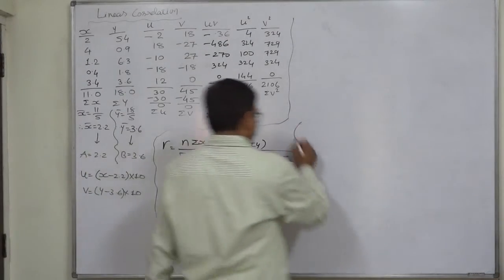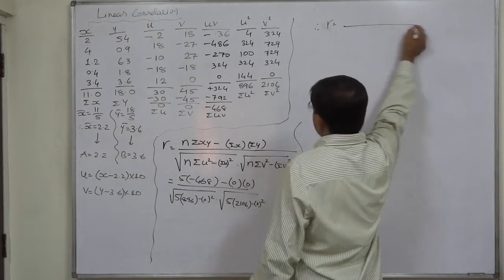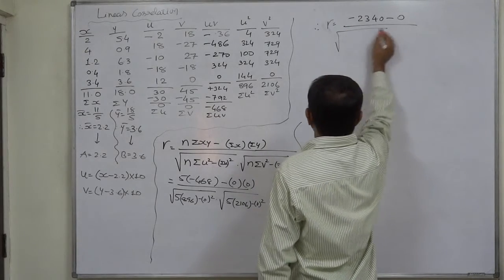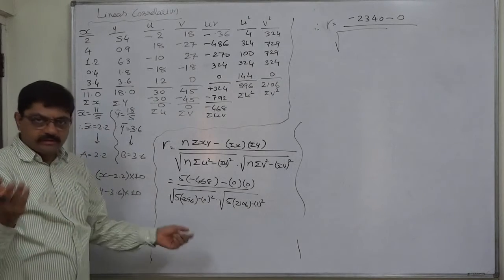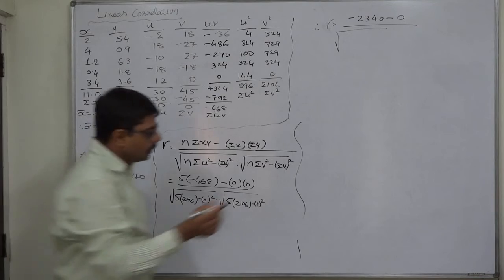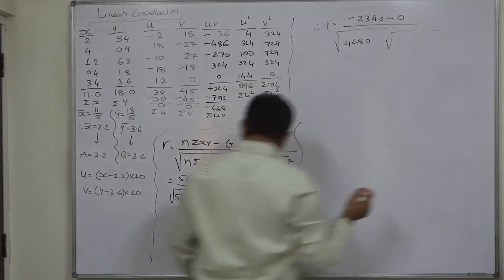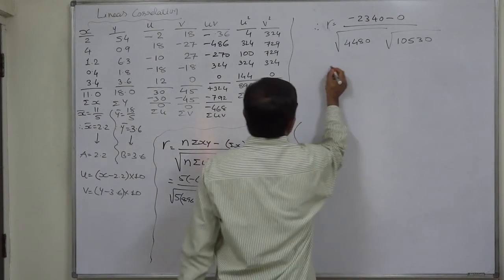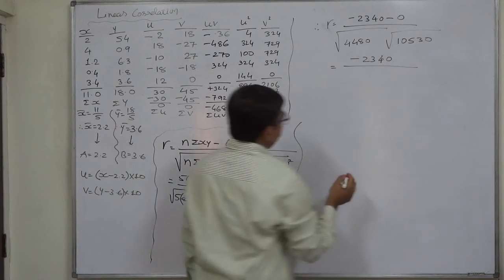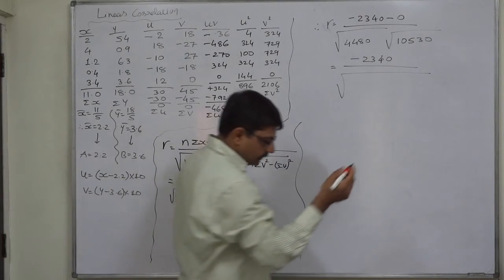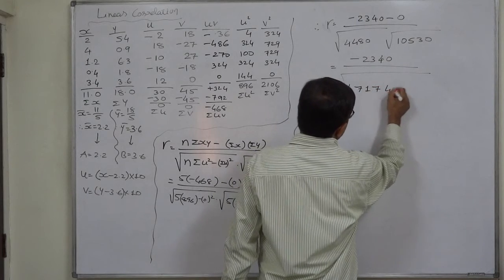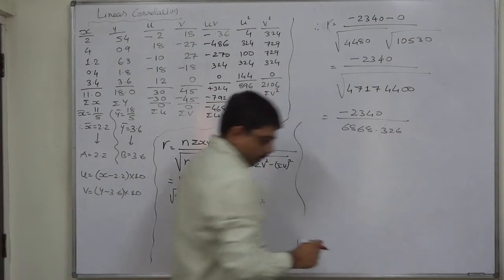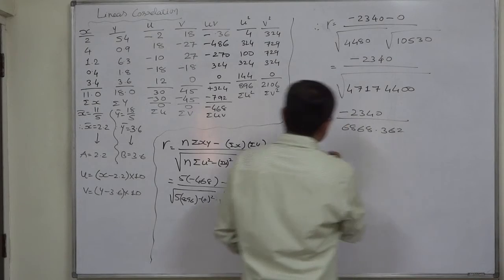Now we can simplify. 5 into minus 468 is minus 2340. 5 into 896 is 4480. 5 into 2106 is 10530. So ultimately it is minus 2340 upon square root of the product of these two, which is 47174400, and its square root is 6868.362. So ultimately the coefficient of correlation comes to minus 0.341 approximately.